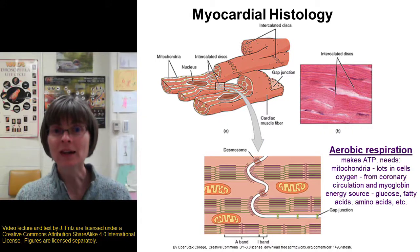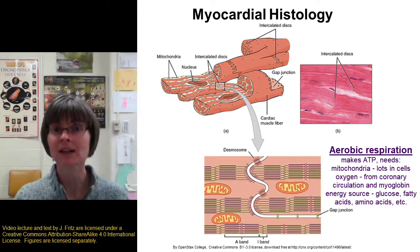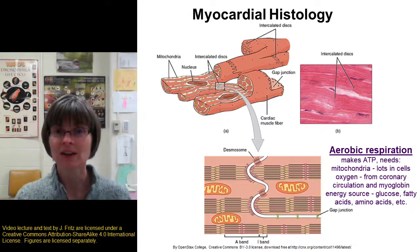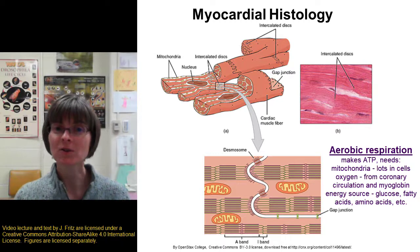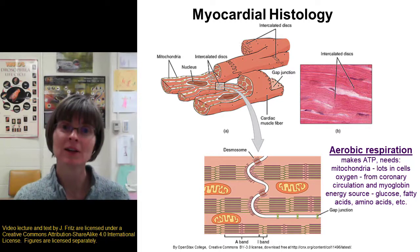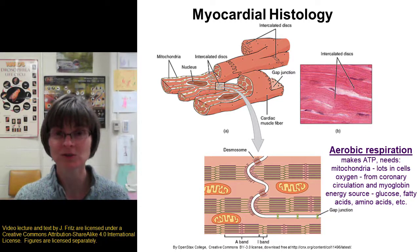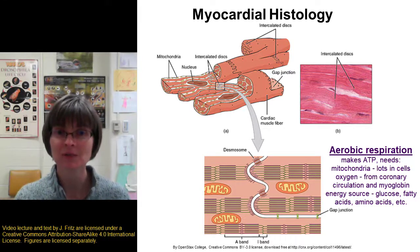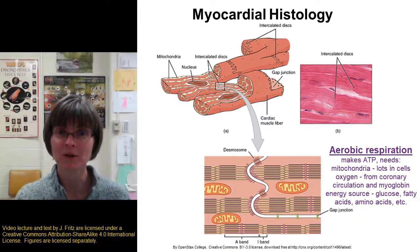For an energy source, most cells in your body use glucose, and cardiac muscle cells also use a lot of glucose — they store it in the form of glycogen inside the cardiac muscle cells. But if glucose is in short supply, your cardiac muscle cells can work on a lot of alternative energy sources as well, such as fatty acids and amino acids, which can be broken down and used to make ATP for your heart muscle.